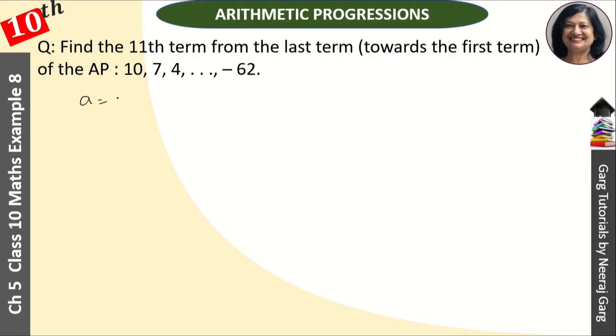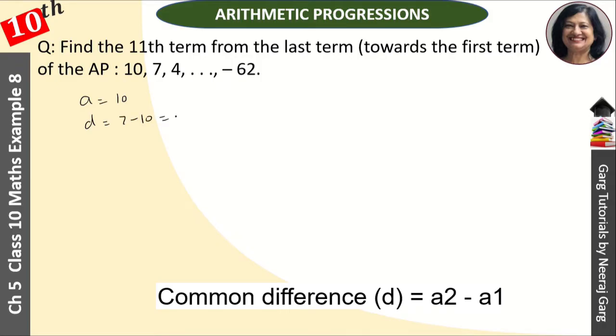What is a? a is 10. How much is d? d = a2 minus a1 means 7 minus 10, this is minus 3. And what is l? l is minus 62.